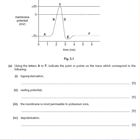Depolarization is here on the trace — because we move from the resting potential into the depolarized state. Depolarization occurs at point B.